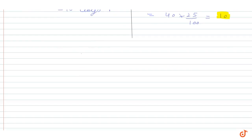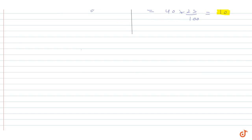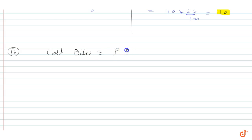We will assume the cost price is equal to Rs. P. So 25% of the cost price is equal to Rs.20. That is, 25% of P is equal to Rs.20.